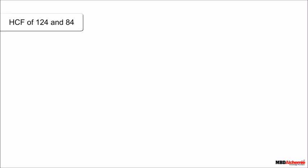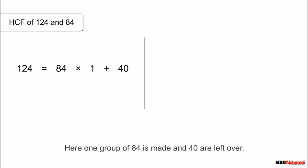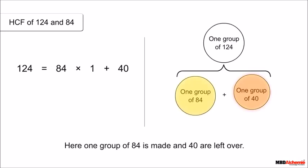Now let's find the HCF of 124 and 84. Here 84 is the smallest number, and if 84 divides 124 without leaving any remainder, it will be the HCF of both numbers. Let's check: 124 = 84 × 1 + 40. One group of 84 is made and 40 are left over. If any number divides 84 completely, it will also divide this one group.